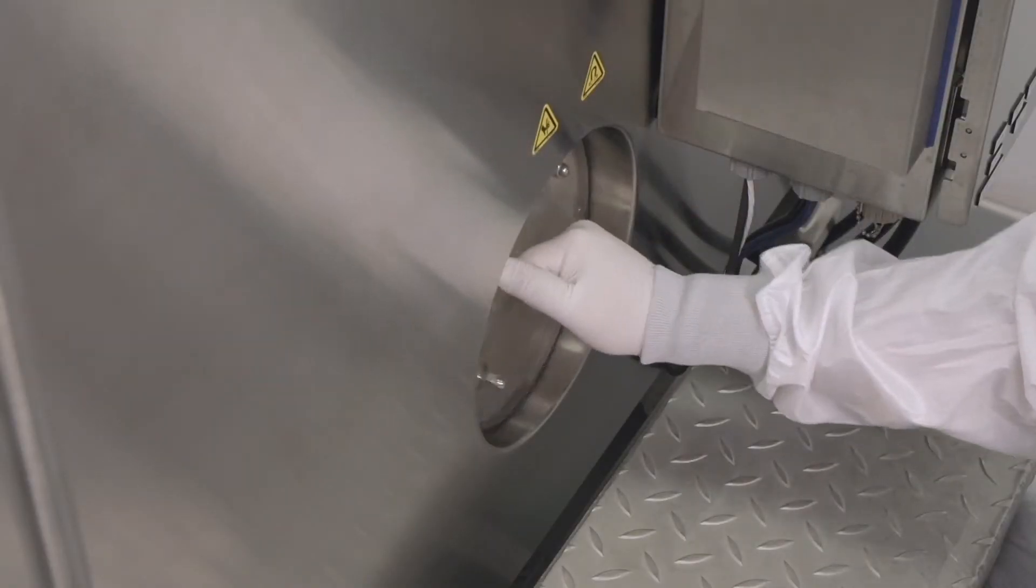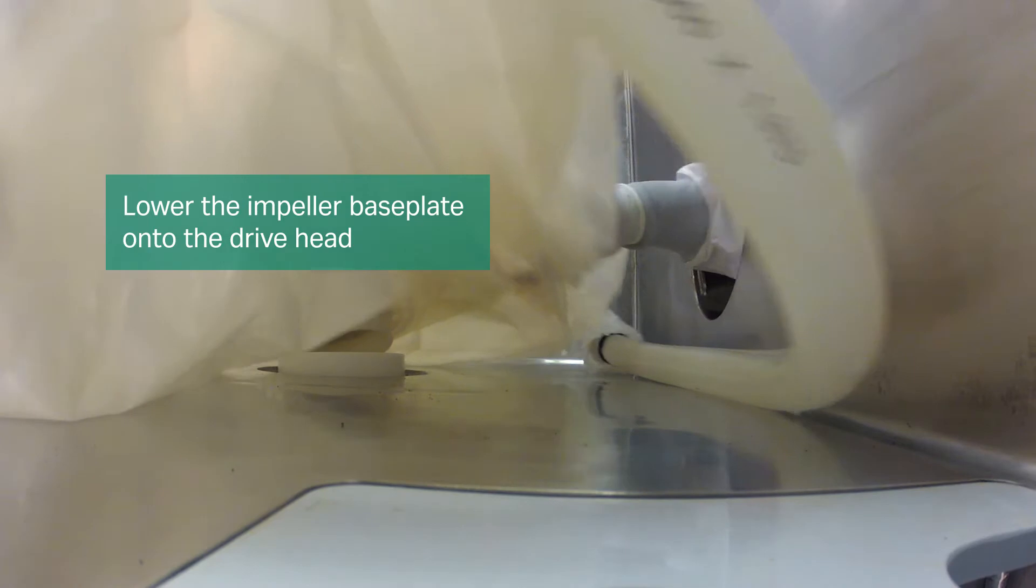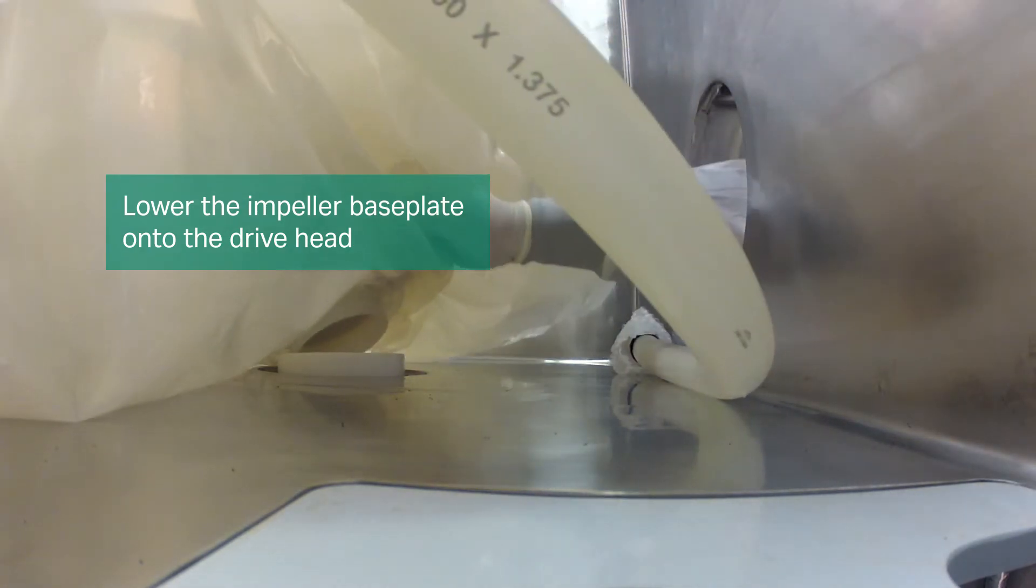Remove the access doors on both sides of the vessel. Position the impeller base plates above the magnetic drive heads.